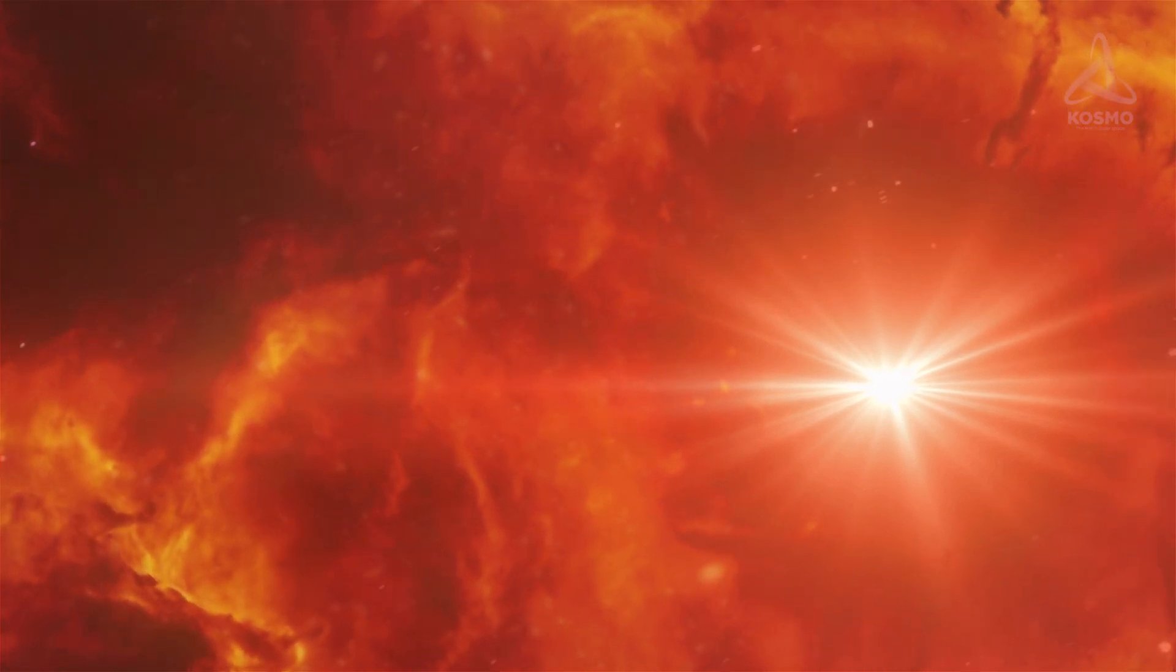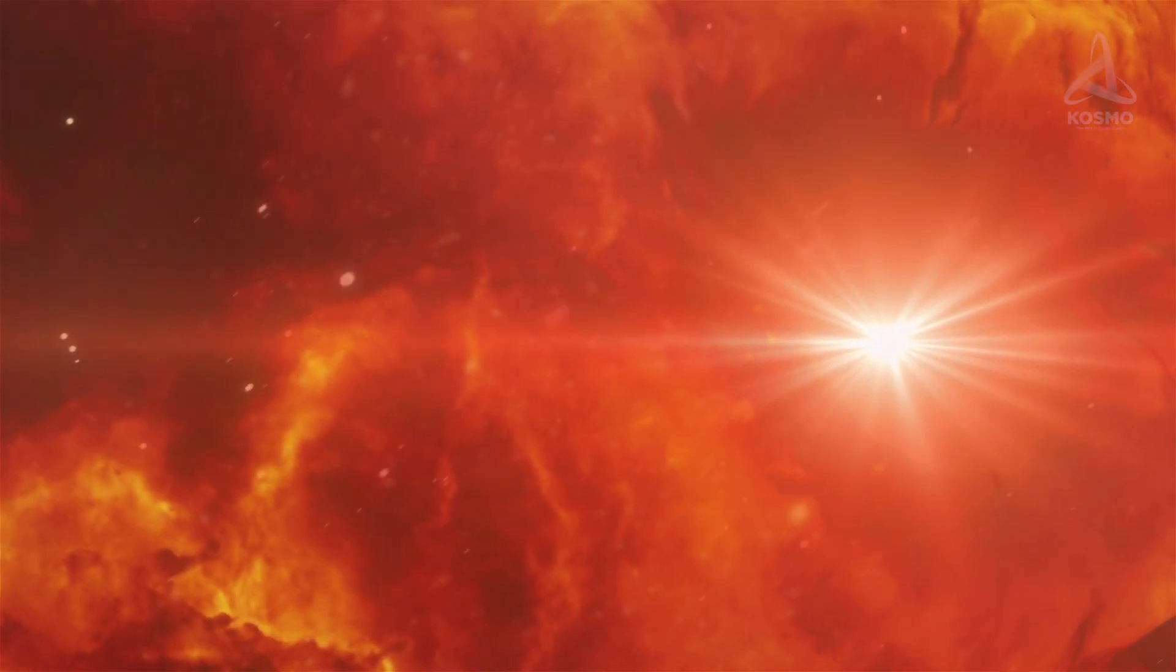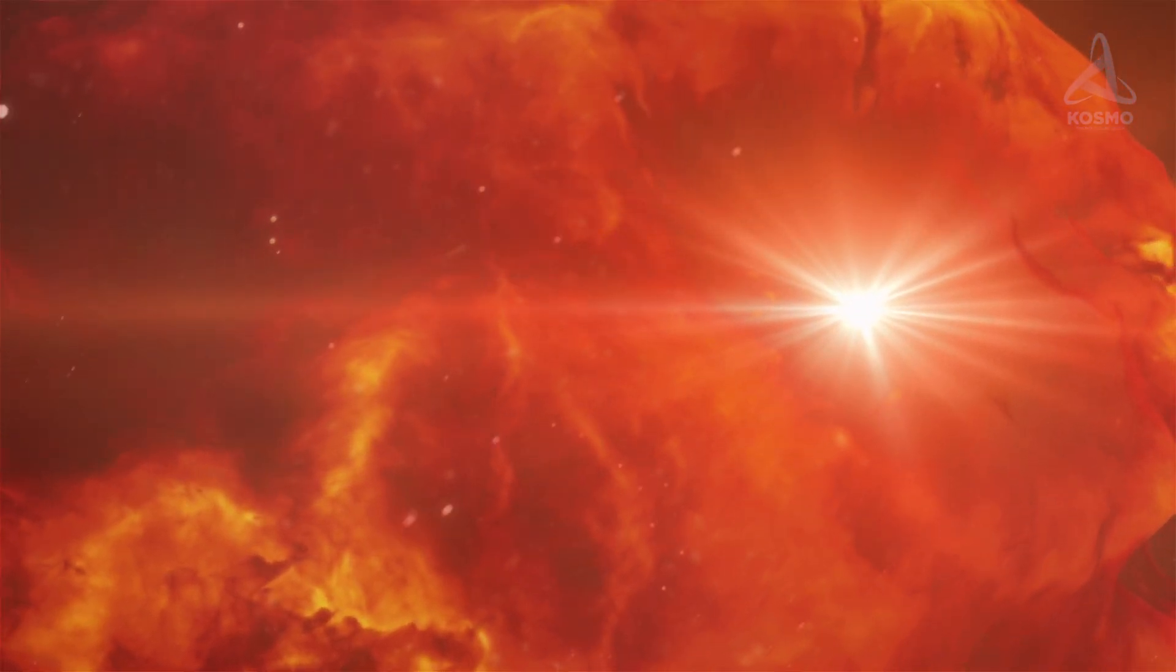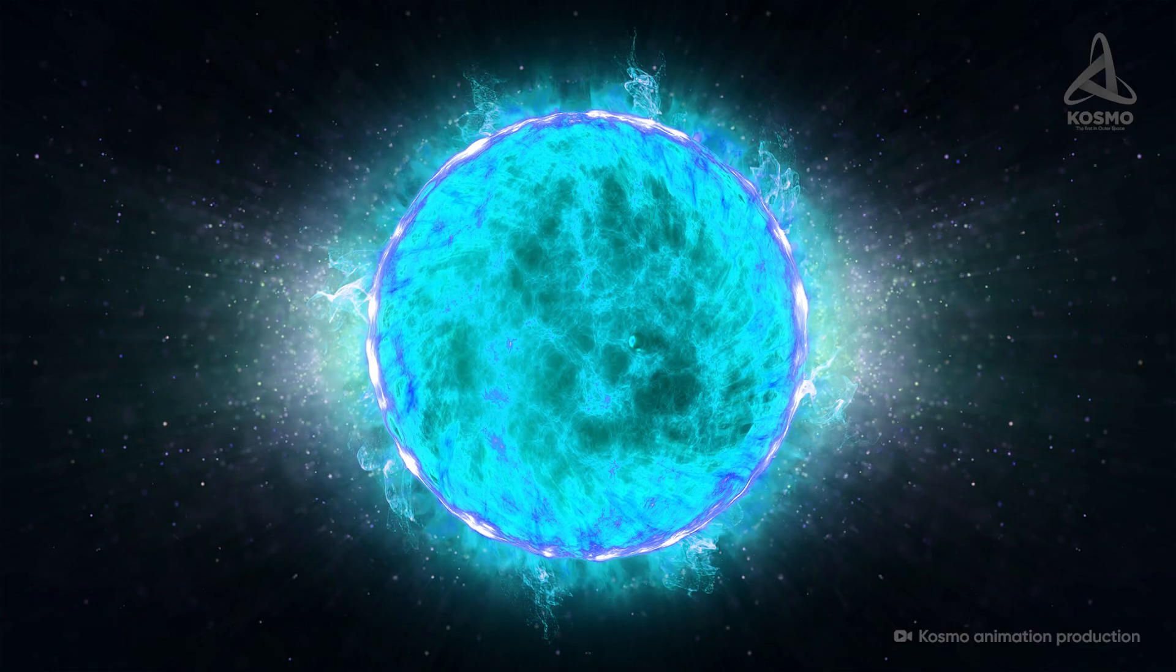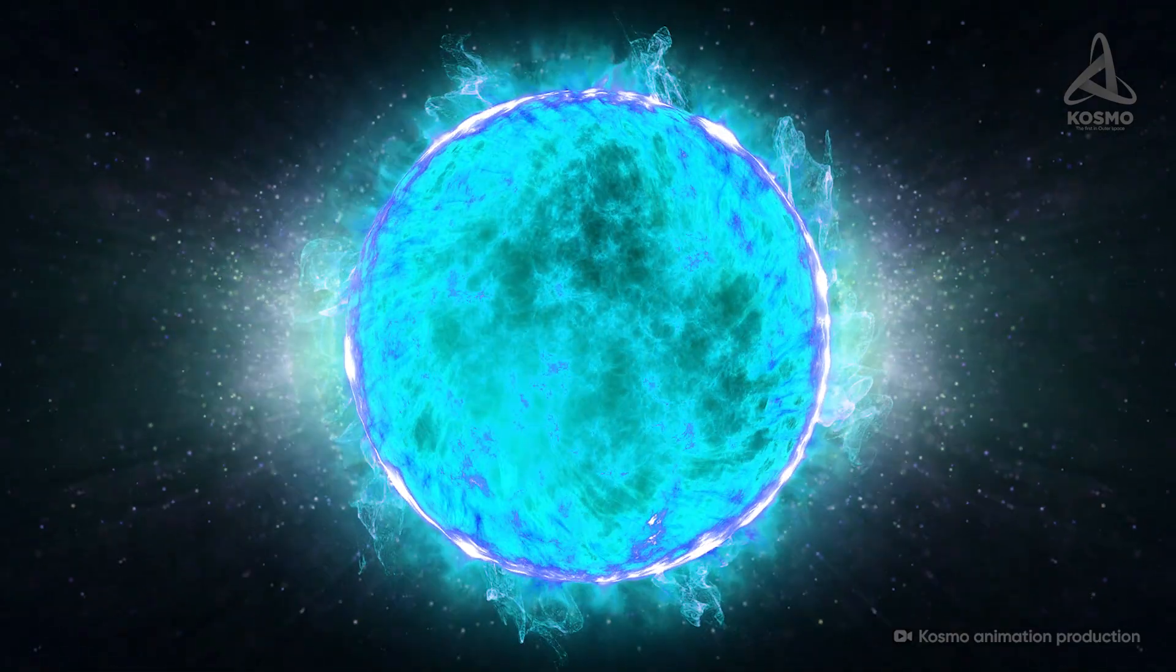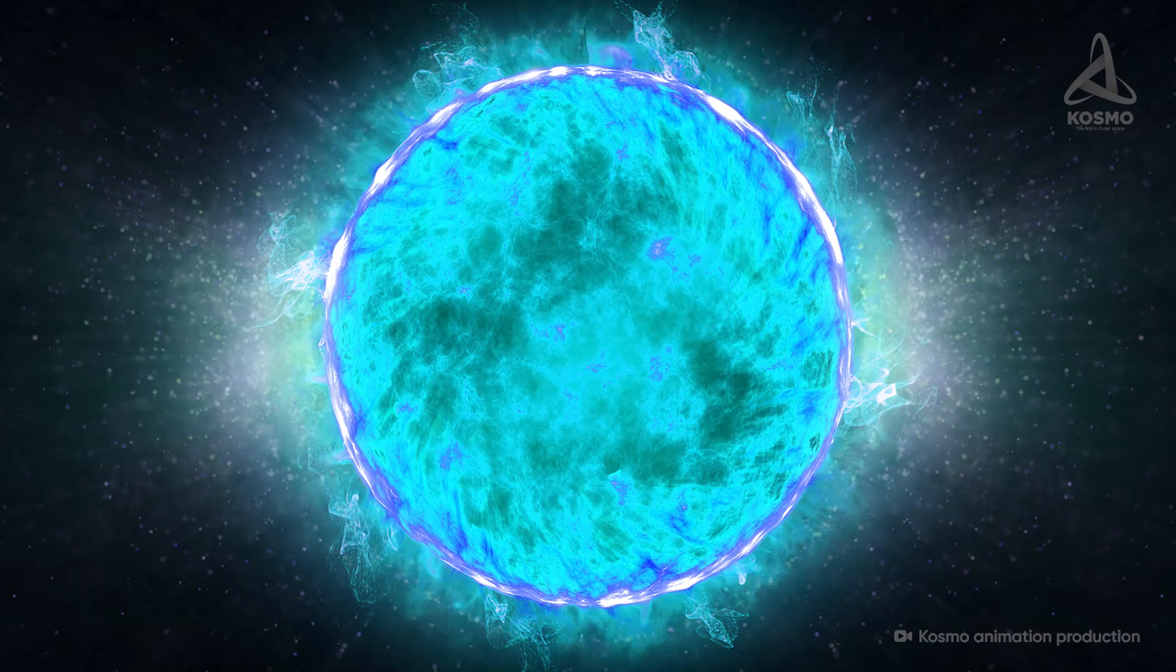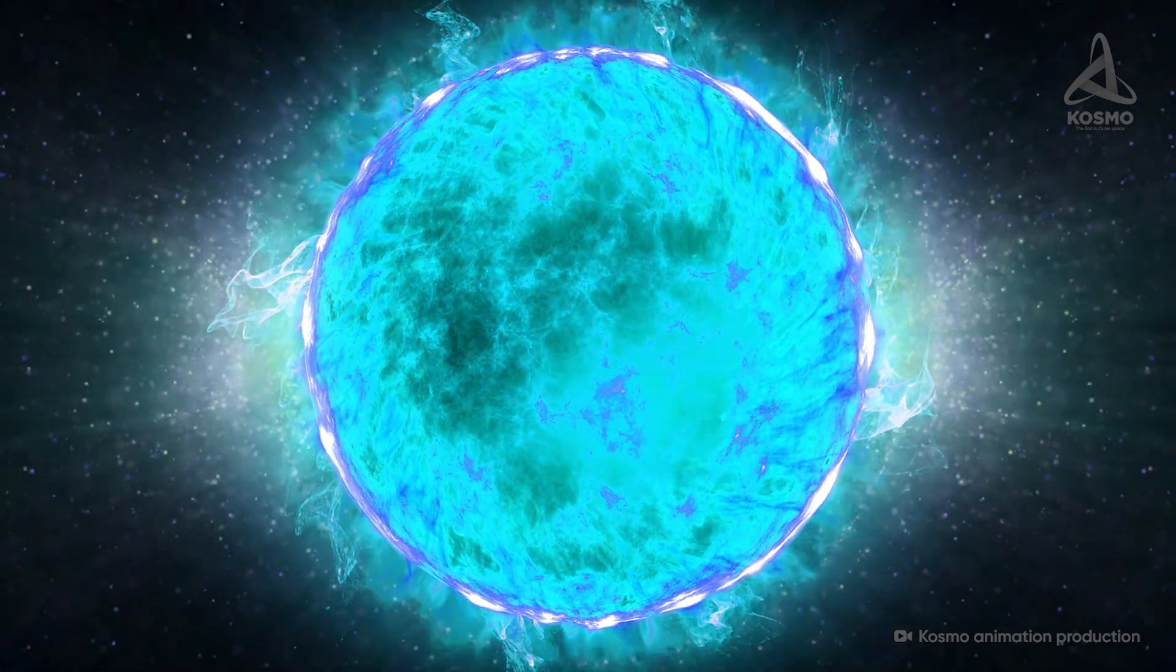According to a proposed theory, the gas cloud around WR102 may probably be remnants of the former hydrogen outer layer of the star. Another theory maintains that the cloud came to be as a result of the particle flow emitted by the star.